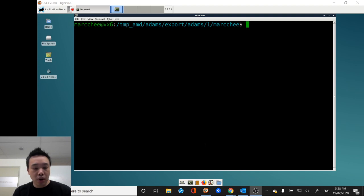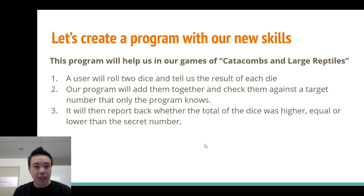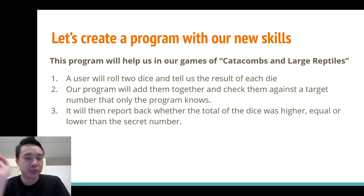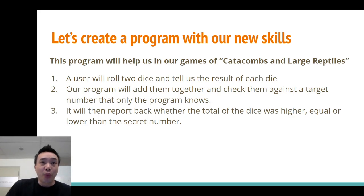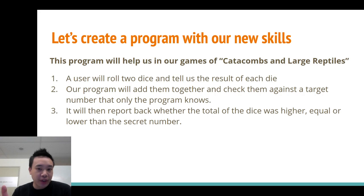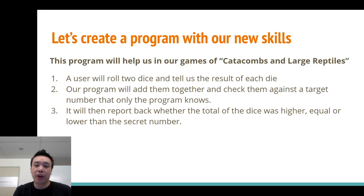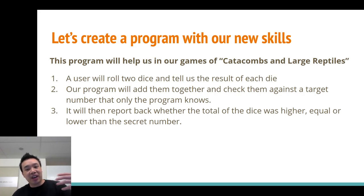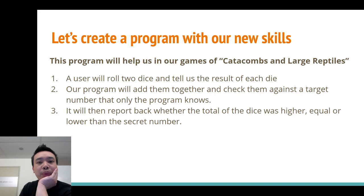So what we're going to do — let me switch back to the lecture slides and talk about this, then start writing some code. I'll go from the code where I was up to and explain it as I go. We're playing a game of catacombs and large reptiles, and what we're going to do is roll two dice, see the results of each die, add them together, check them against a total we'll keep as a constant, and report back whether the dice total was equal, higher, or lower than the secret number.